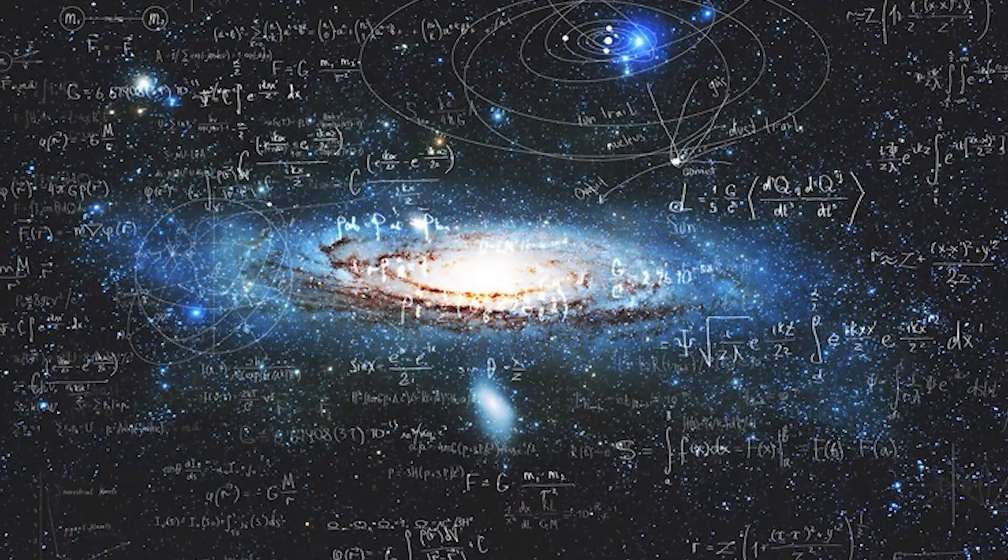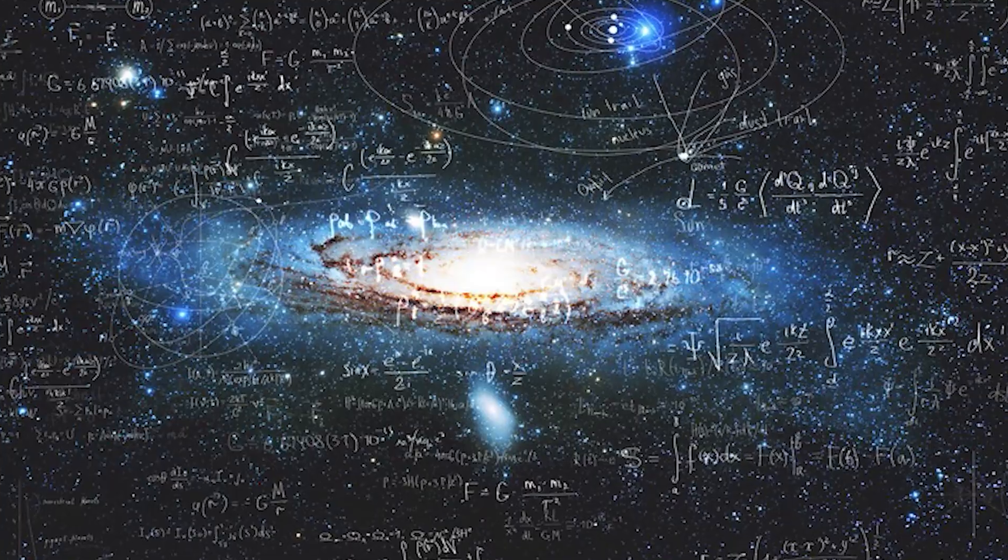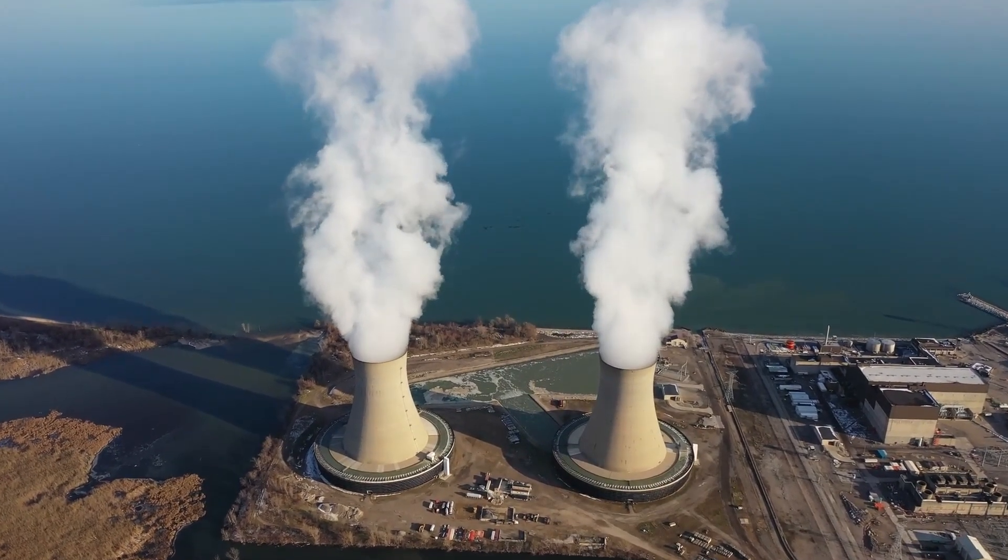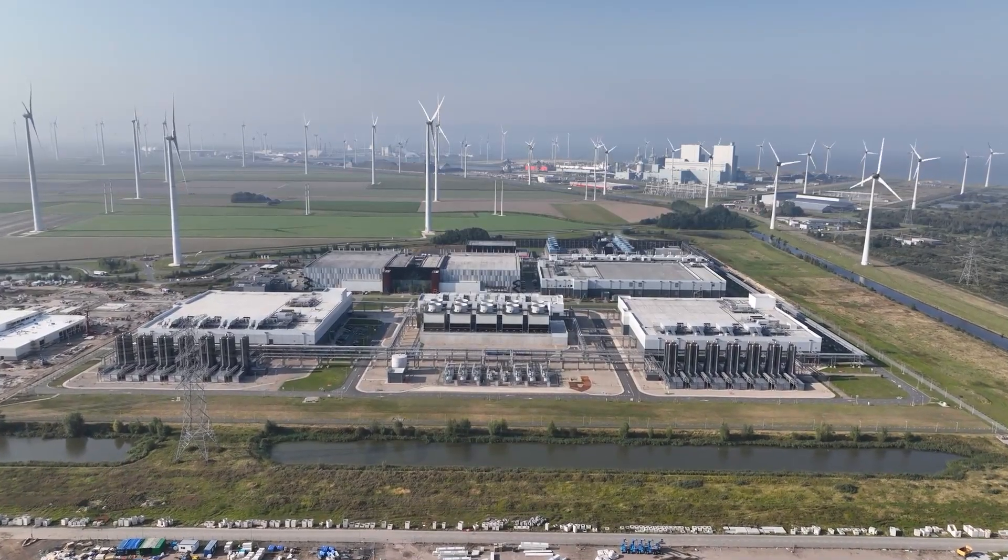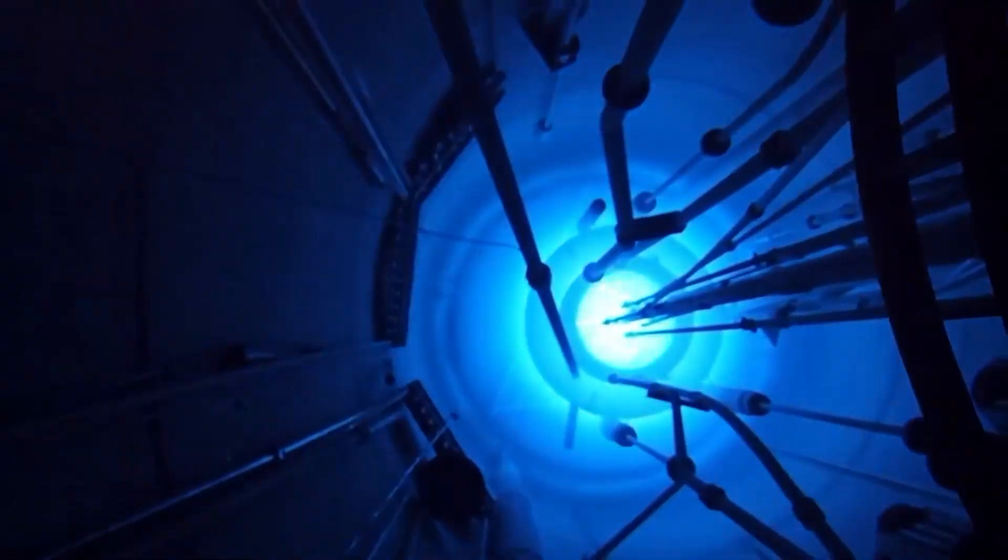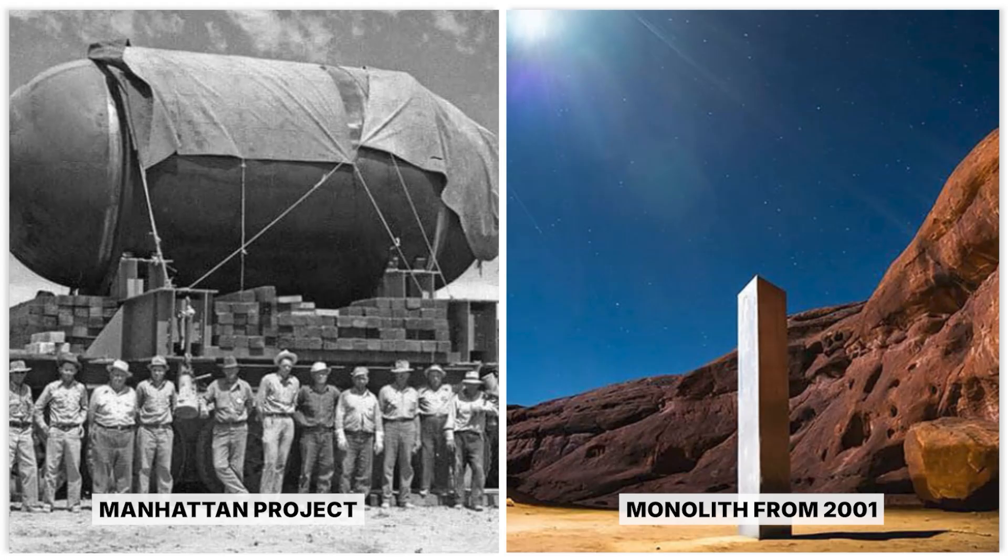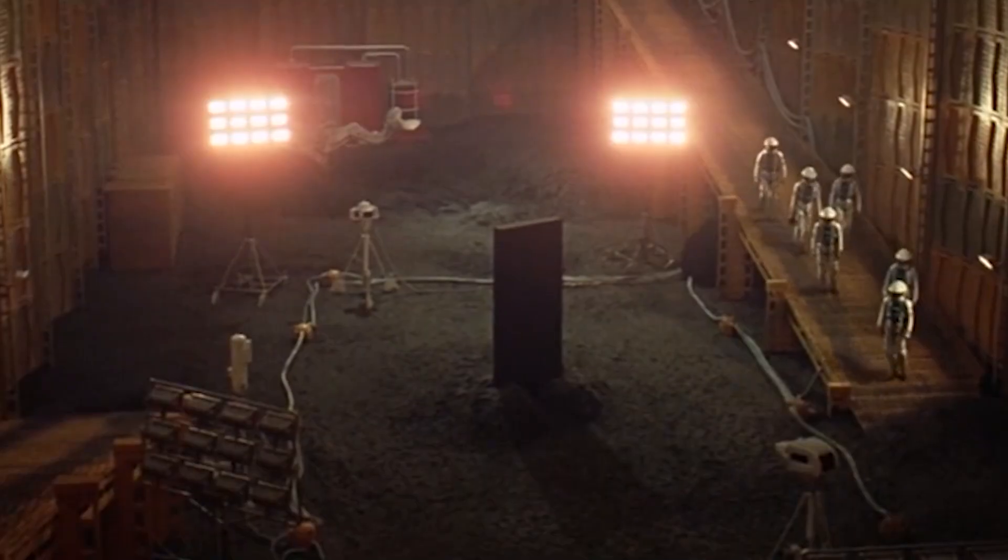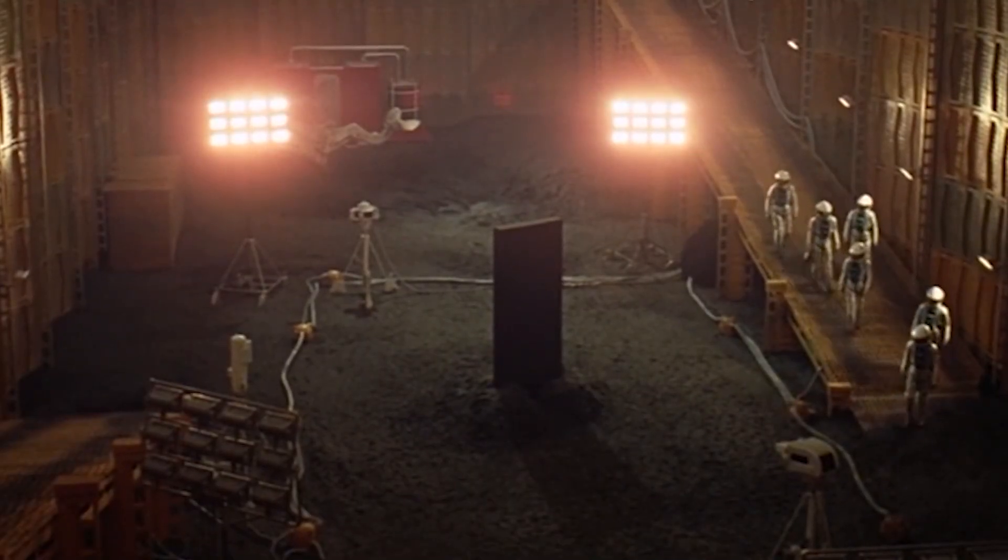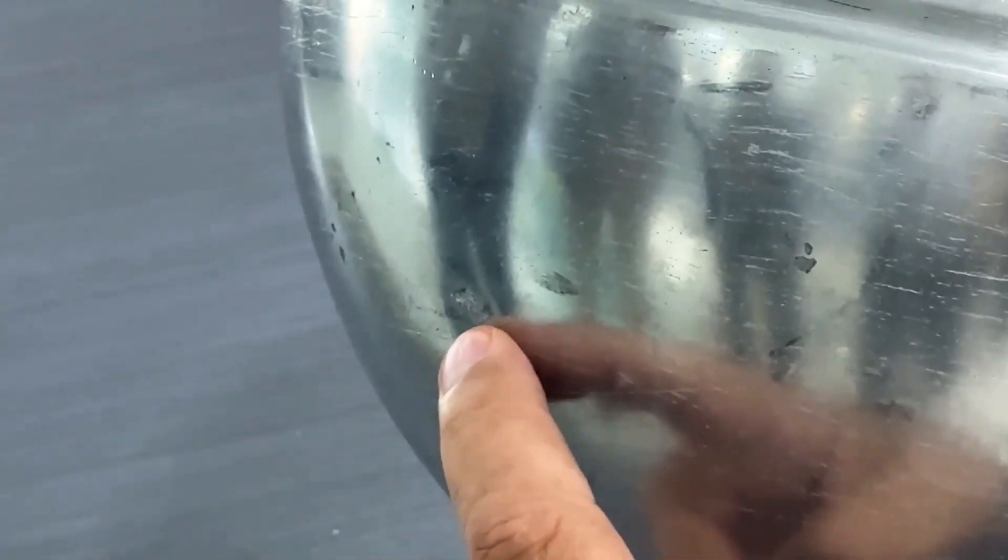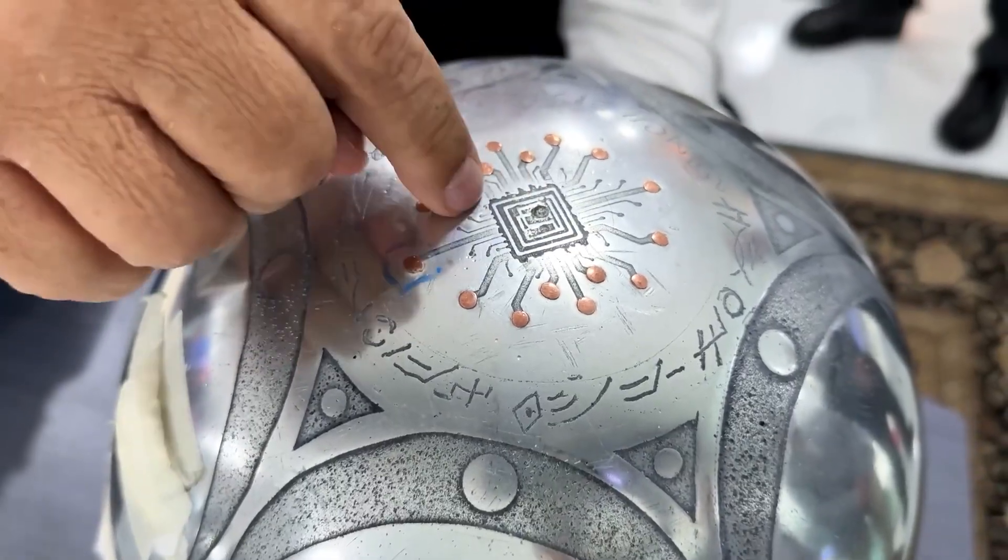This discovery is not like learning to split the atom. This is like finding the universe's source code. When humanity unlocked nuclear power, we wrestled with a terrible duality, the potential for clean, limitless energy alongside the specter of absolute annihilation. We chose to build a bomb. This new knowledge presents a far more profound dilemma. This feels less like the Manhattan Project and more like finding the monolith from 2001, a space odyssey buried in our own backyard. It is an artifact so far beyond our comprehension that its very existence rewrites every rule. We have been handed the operating system for reality from a hyper-advanced intelligence, but the user manual is nowhere in sight.